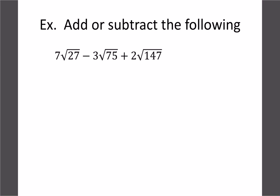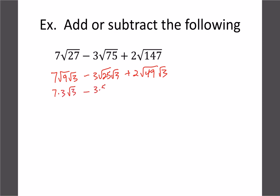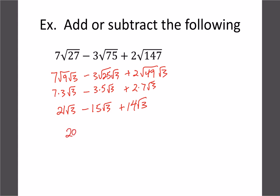Now let's try one with coefficients out front. Think of this as 7×√27: leave the 7 out, break 27 into 9×3, break 75 into 25×3, and 147 into 49×3. They all have √3. So we get 7×3√3 = 21√3, then 3×5√3 = 15√3, and 2×7√3 = 14√3. Now add or subtract: 21 - 15 + 14 = 20, so the answer is 20√3. You can work row by row or one at a time — either approach works.